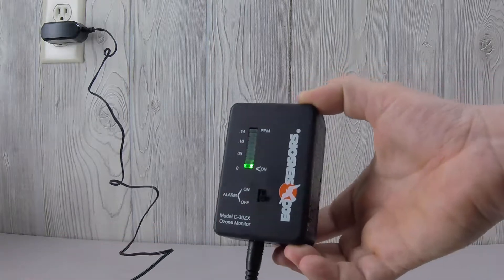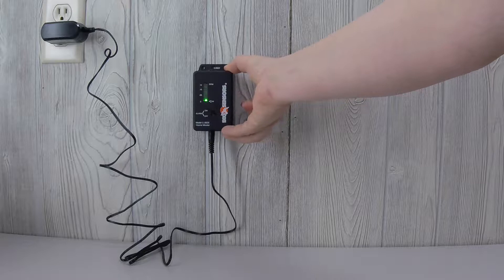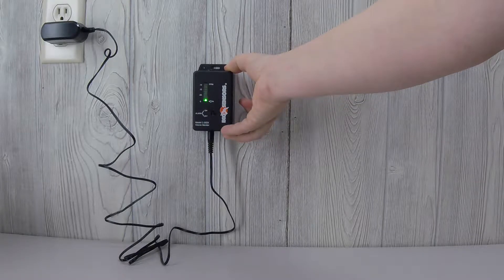The Ecosensor's C30ZX is a wall-mounted ozone detector with an instant LED readout, audible safety alarm, and relay switch.